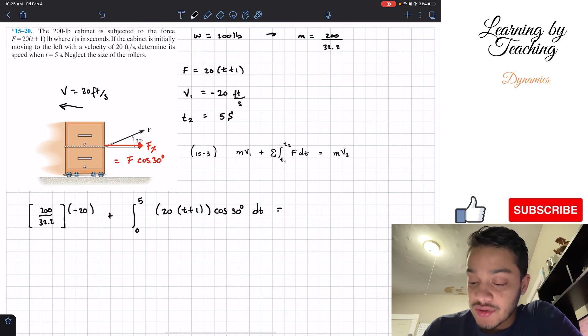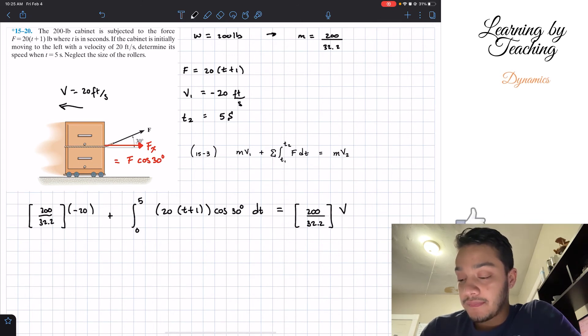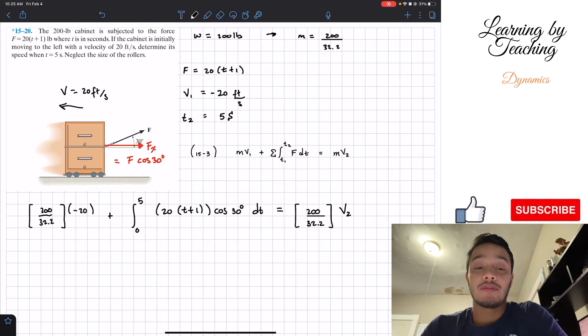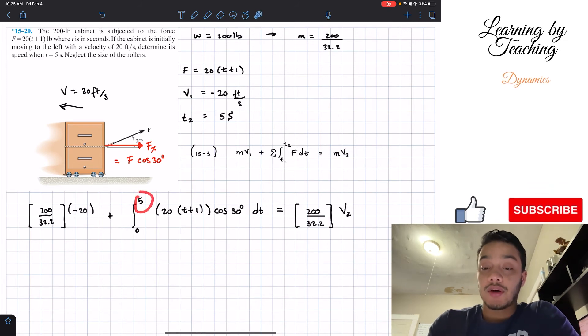And this all should be equal to the mass again. So as we did it before, 200 divided by 32.2 and multiplied by the velocity that we're trying to find. So the speed at this, at this five second mark.